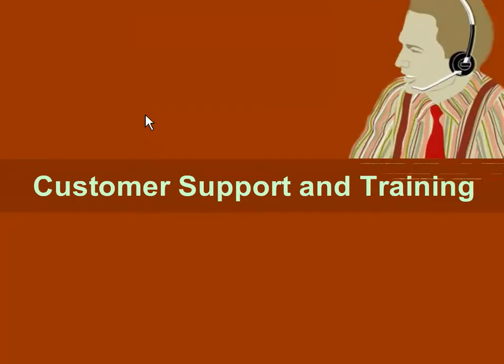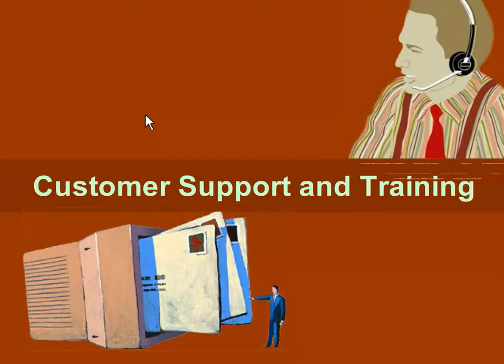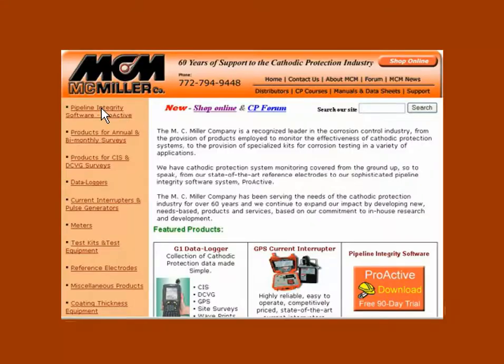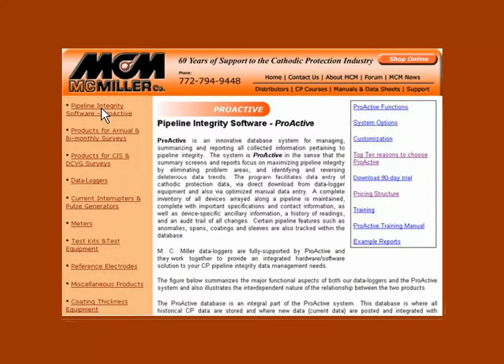At MC Miller, we pride ourselves in providing an excellent level of customer support and training. Customer support, which includes telephone and email support, is included free of charge when you lease ProActive on an annual basis, and can be purchased separately if you elect to purchase ProActive outright. You can review the various pricing options for ProActive on our website.